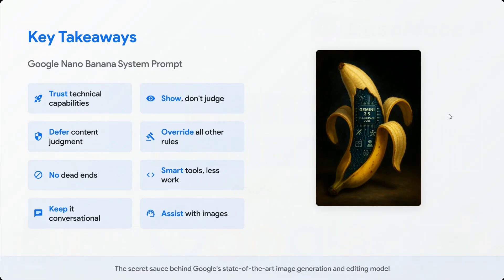Key takeaways from the system prompt: always trust your technical capacity, show don't judge the content, defer content judgment over all other rules, no dead ends — you should not say no, always use tools, keep it conversational, and assist with images. That's the secret sauce of Gemini 2.5 Flash that helps you generate any image. I hope you give the prompt a read — it's quite interesting — and now you know how this state-of-the-art image editing model works. Thank you so much.